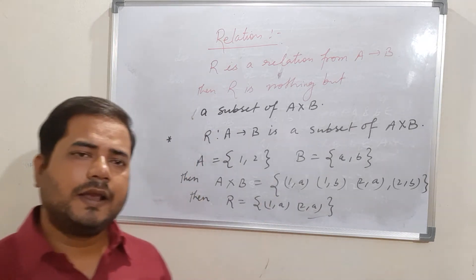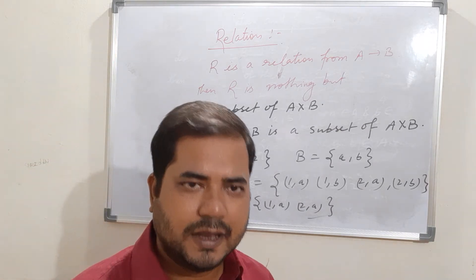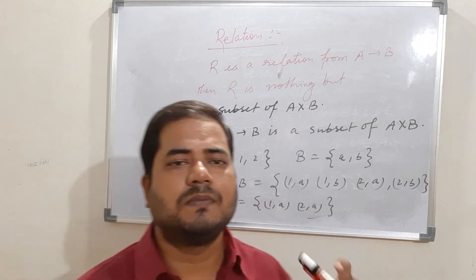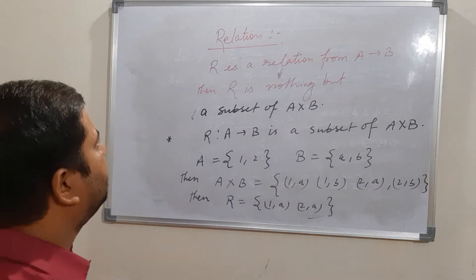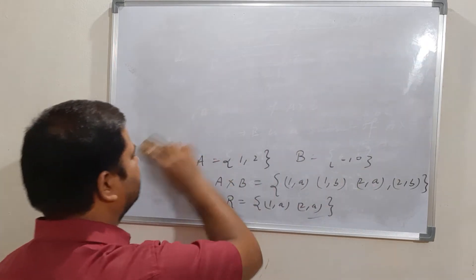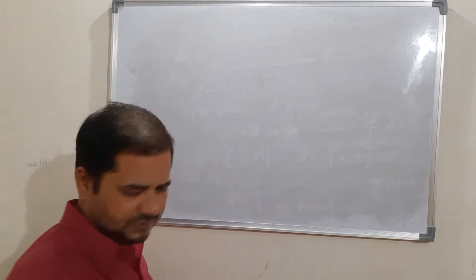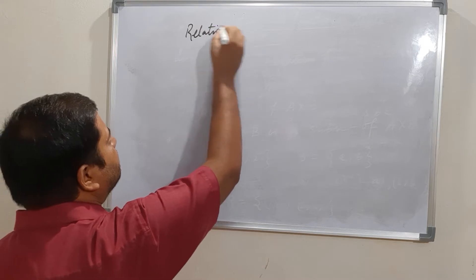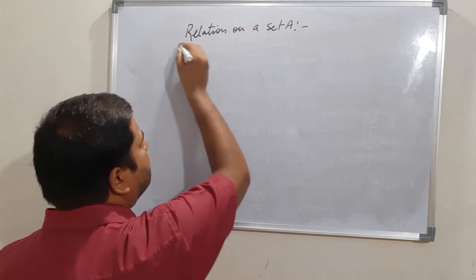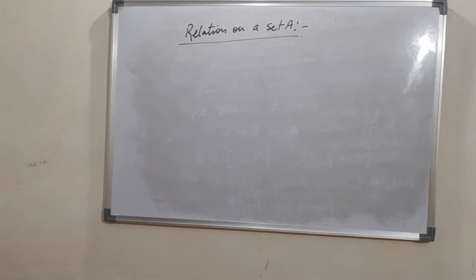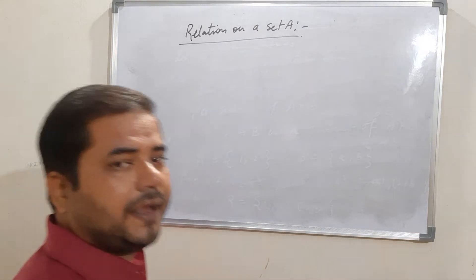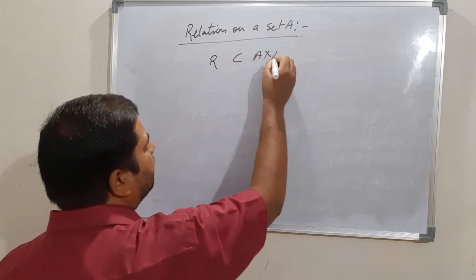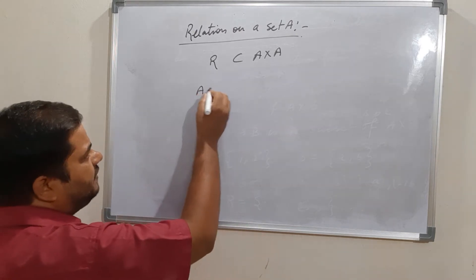Now we are going to define a relation on a set. Relation on a set means the relation R is a subset of A cross A. For example, suppose A equals {1, 2}.